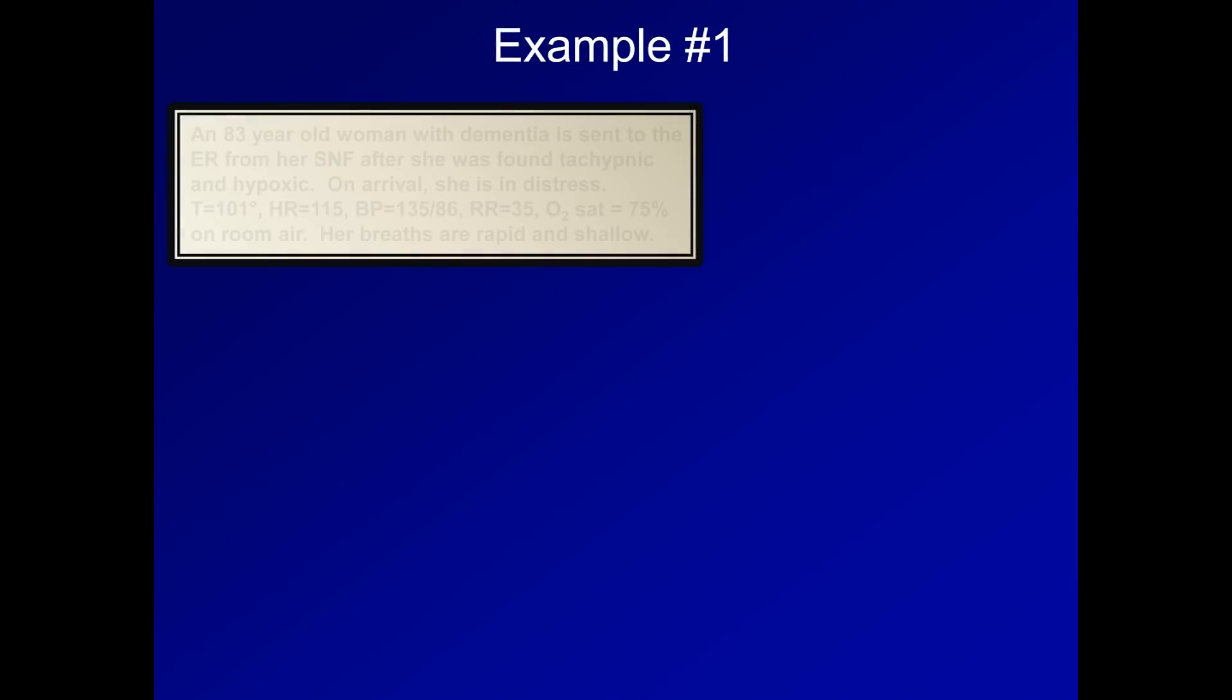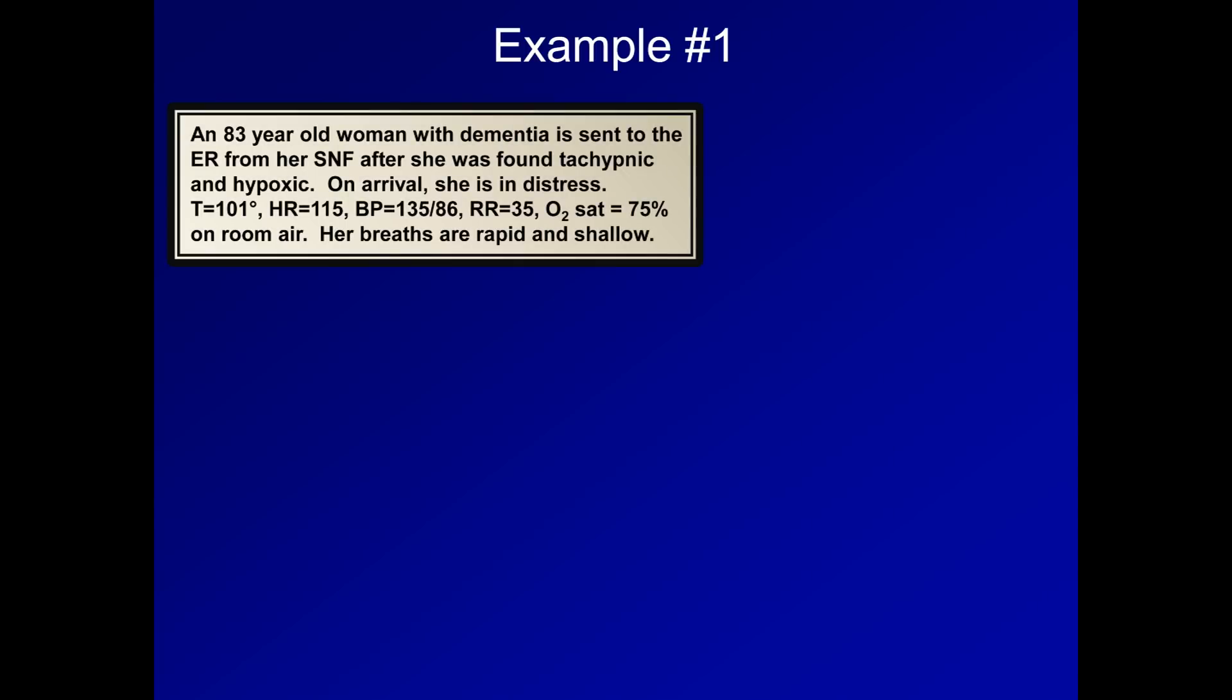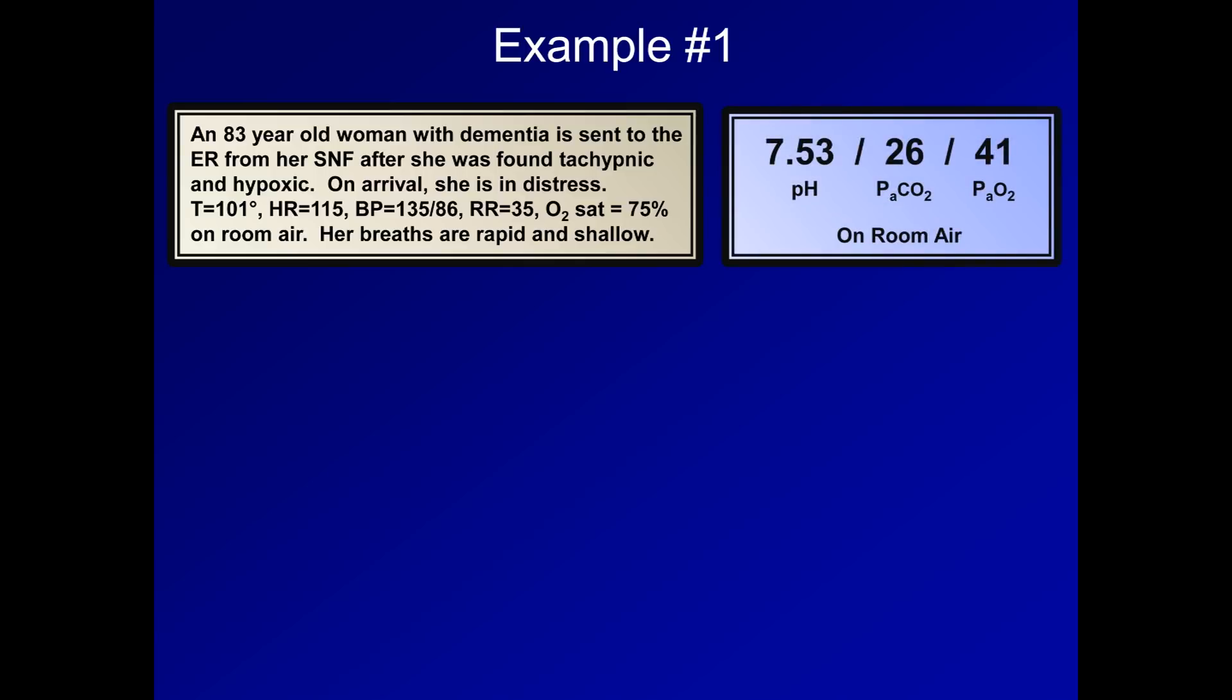At this point, I'd like to go through two examples of how to use the PaO2 and the AA gradient to better understand a clinical scenario. Example 1. An 83-year-old woman with dementia is sent to the emergency room from her skilled nursing facility after she was found to be tachypneic and hypoxic. On arrival, she is in distress. Temperature is 101 degrees. Heart rate is 115. BP 135 over 86. Respiratory rate 35. And O2 sat is 75% on room air. Her breaths are rapid and shallow. And here is her ABG on room air, which is always critical to specify.